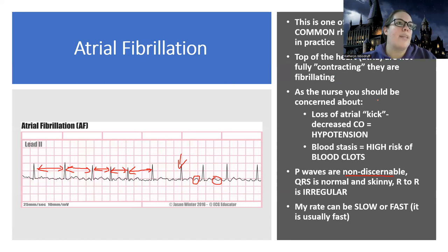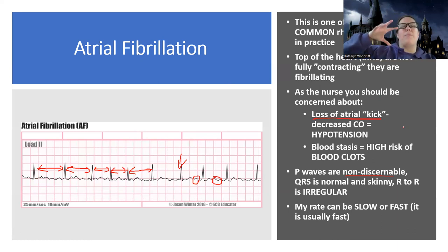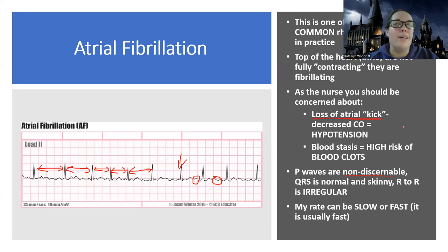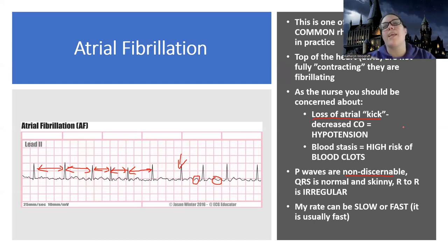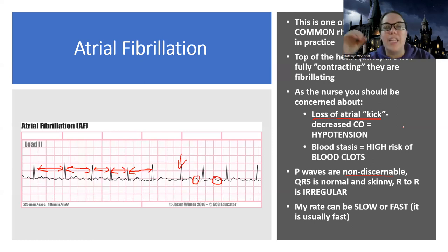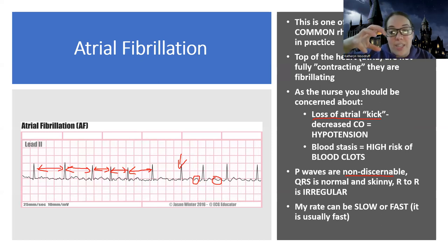There's also this loss of atrial kick. Normally, the top of the heart and the bottom of the heart work in sync together. But AFib messes that all up. Normally the top of the heart has this thing called atrial kick — at the end of its contraction, it gives a little bit more blood to the ventricles. You lose that in AFib. It's not just that less blood is moving forward — there's also this loss of that special extra function that gives a little bit of extra cardiac output to the bottom of the heart.